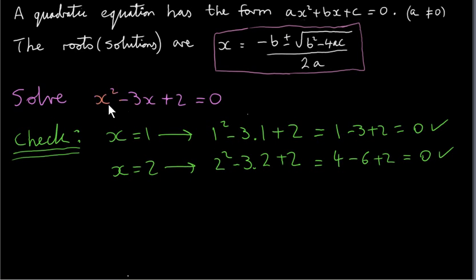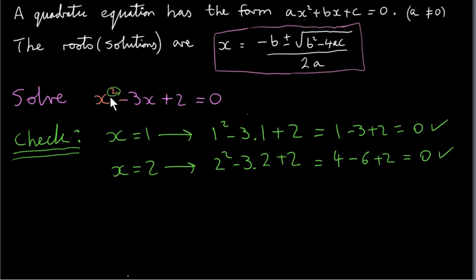These are the only two numbers that will satisfy this equation. As a matter of fact, for all quadratic equations there are at most two different solutions, because the power is 2. If the power was 3, we would have at most three different solutions — in that case, we would be talking about a cubic equation. I'll cover cubic equations in later videos.